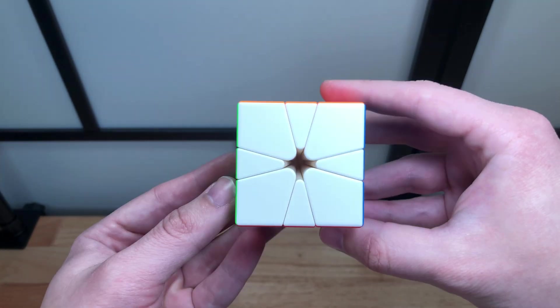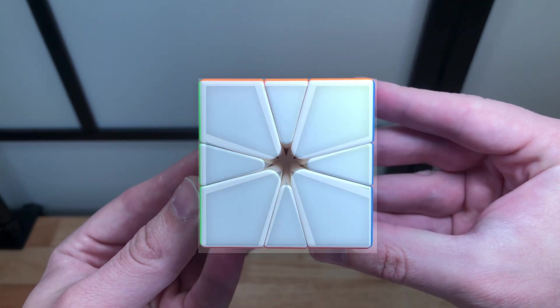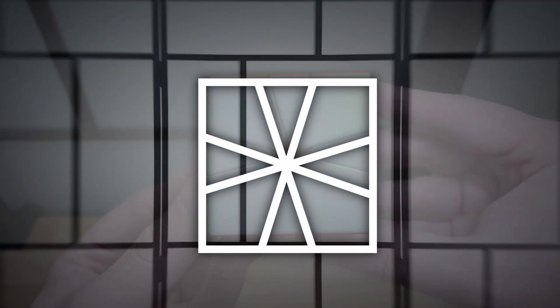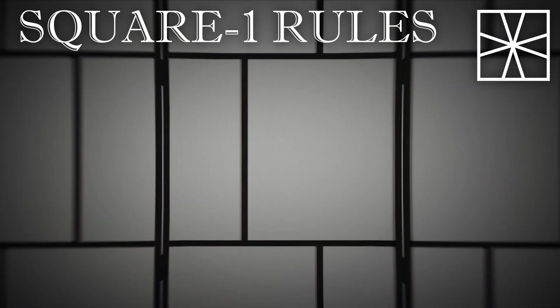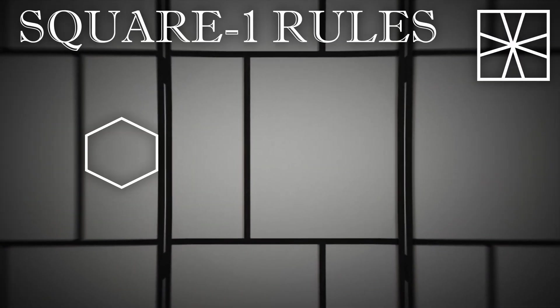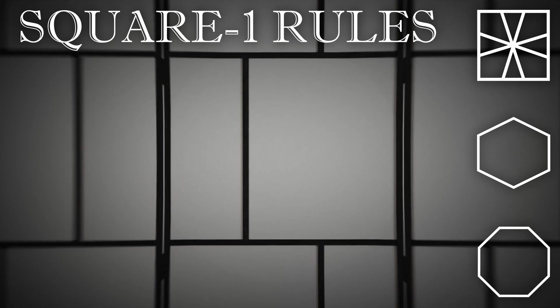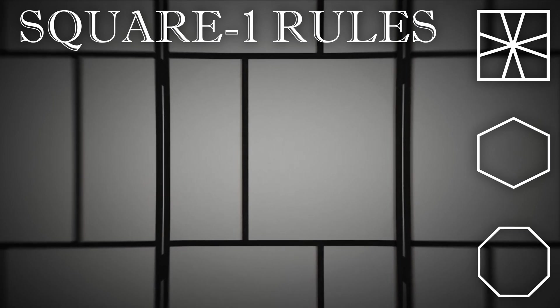How would that work? The square in the Square-1's name presumably refers to the shape of the top and bottom layers. So what if we take the exact same rules that define the Square-1 and apply them to other polygons, with everything else being exactly the same?